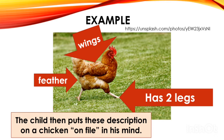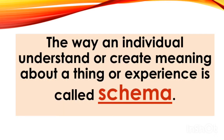The child puts this description on file in his mind. When he sees another similar chicken, he pulls out the file — his schema of a chicken — looks at the animal and says: two legs, feather, and wings. That is a chicken. The way an individual understands or creates meaning about a thing or experience is called the schema.